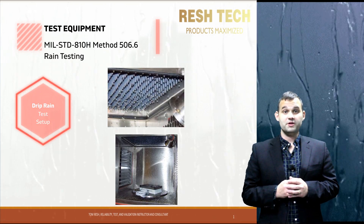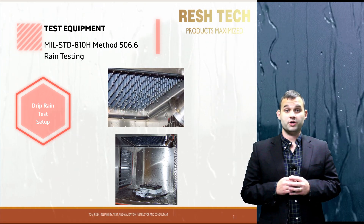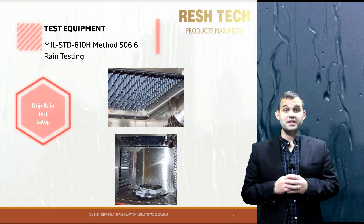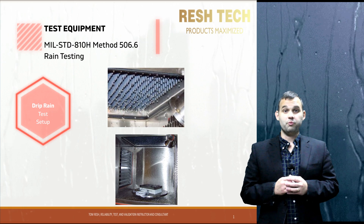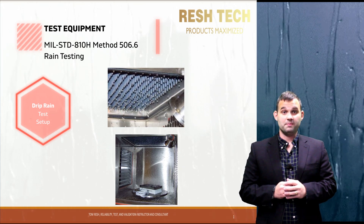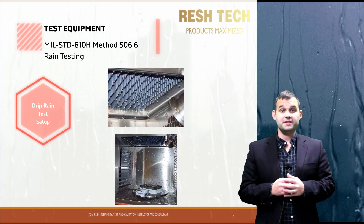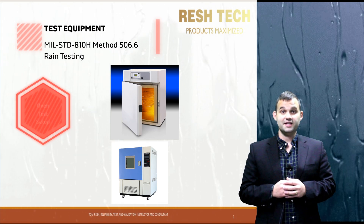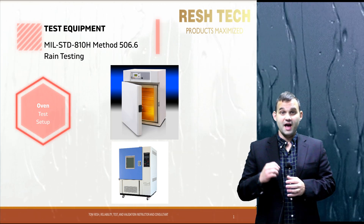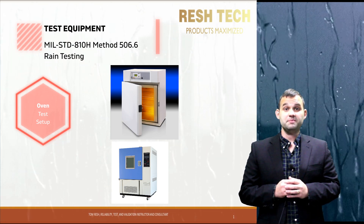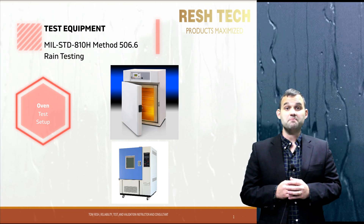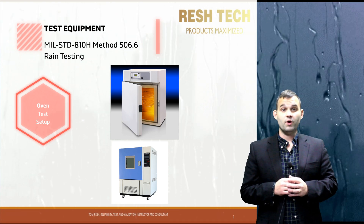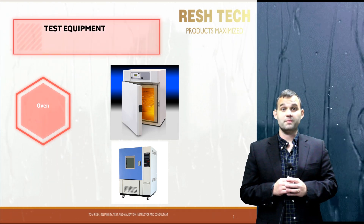For Procedure 3, the test equipment used for drip rain testing is a drip pan. This test uses water sitting on top of a pan, forced through hollow needles or dimples by gravity to drip water onto your test sample. The droplet size and rainfall amount are controlled by the size and number of needles or dimples. You will also need an oven or temperature chamber, as Procedures 1 and 3 specify ensuring your system is a minimum of 10°C or 18°F above the temperature of the rain water.